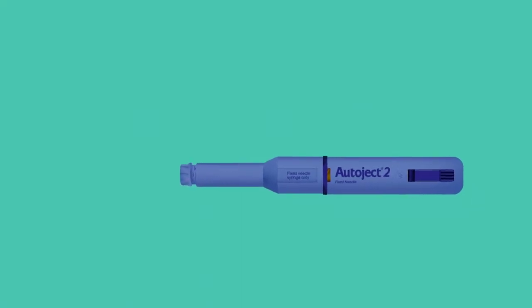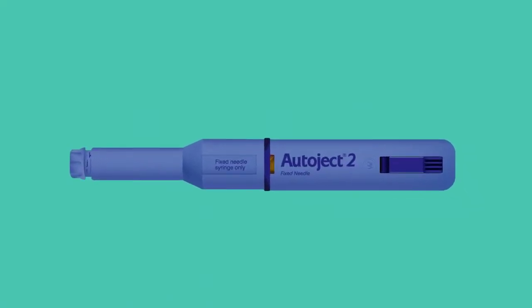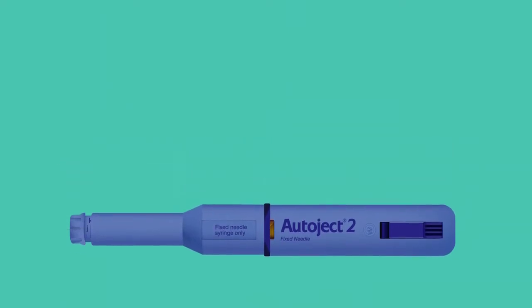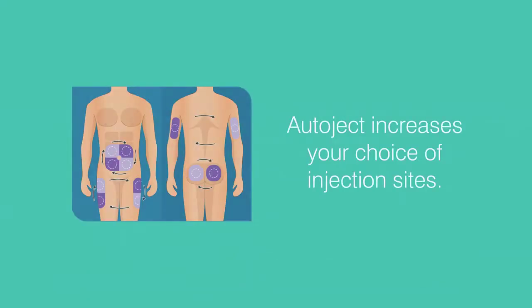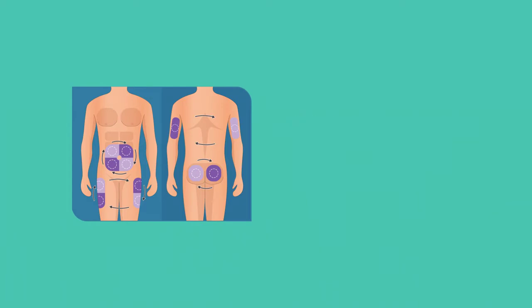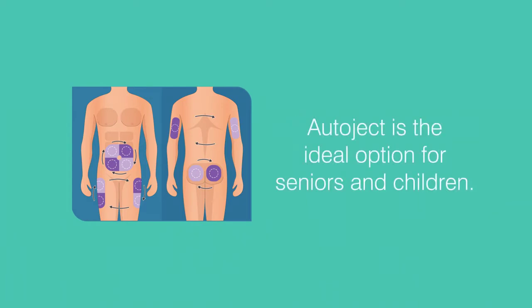The secret to a better injection experience is in the device's thoughtful design. To start, the needle is concealed from view helping to alleviate needle anxiety. Simple one-handed operation also increases your choice of injection sites, making Autoject the ideal option for seniors and children who may have previously relied on others when injecting.